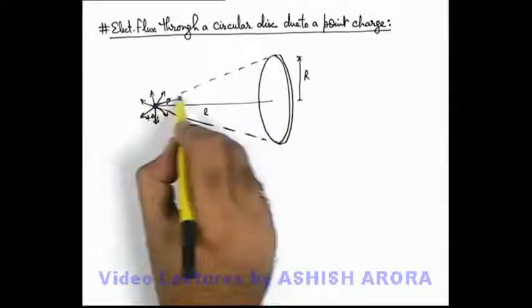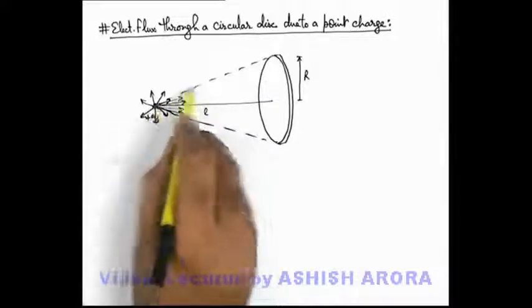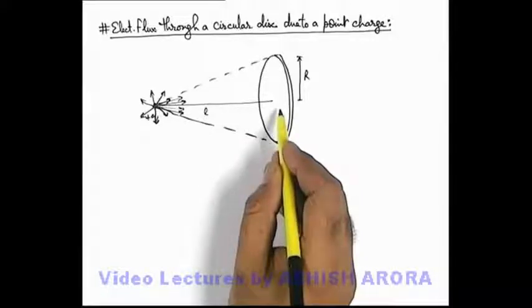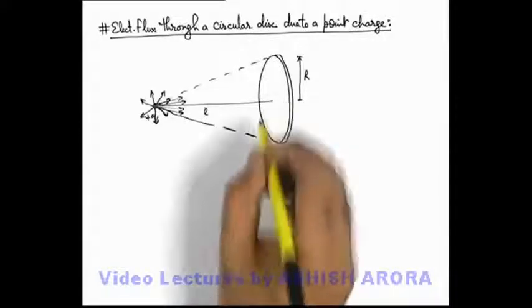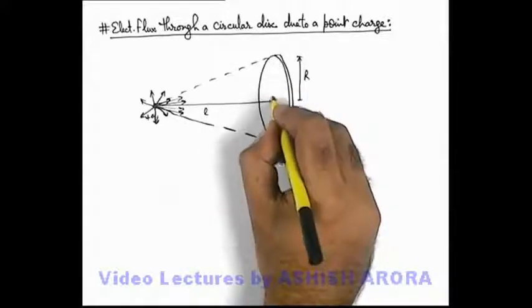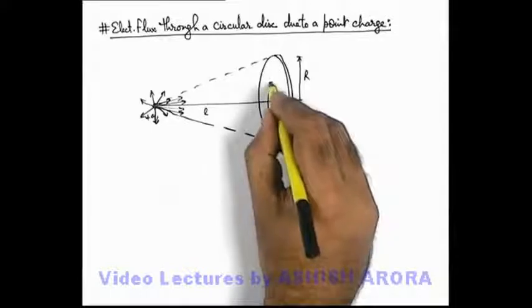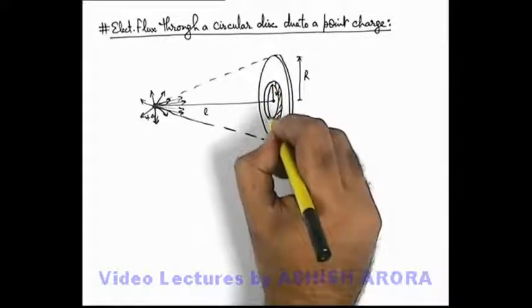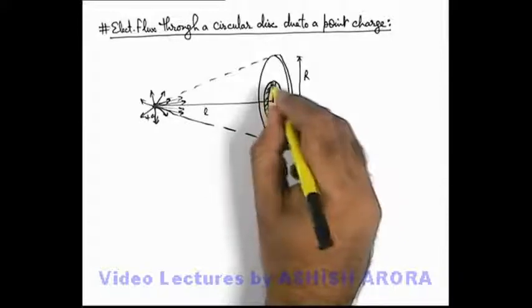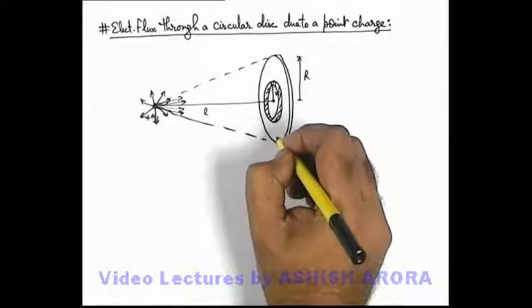Then whichever electric flux or lines which will be originated from the charge within this region will pass through the disc. So in this situation to calculate the electric flux through the disc, we consider a small element, elemental ring we consider which is of radius x and width dx. And we calculate the flux through this element because electric field due to the charge at various points of the disc is non-uniform.